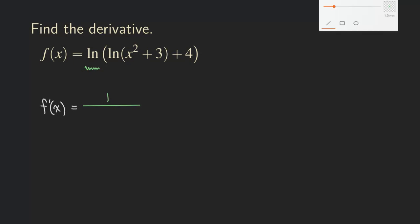So let me put that here. And then all that stuff on the inside. So let's just put it in there. We have ln of x squared plus 3, and then plus 4. So I put everything that's inside this ln function in the denominator. So we have one over all that.